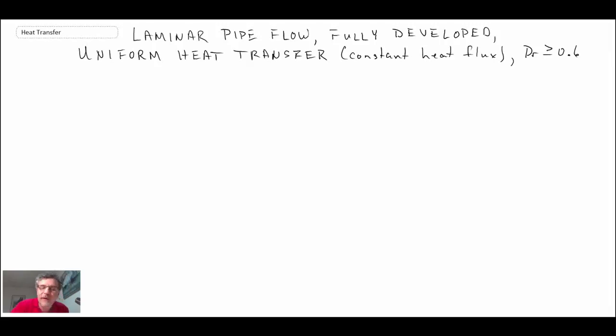So we'll begin with the case of laminar pipe flow fully developed and we're assuming uniform heat transfer constant heat flux and this is for a Prandtl number greater than 0.6, so we get a simple expression for the Nusselt number based on diameter.